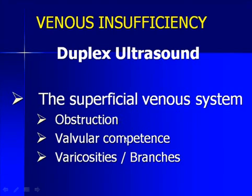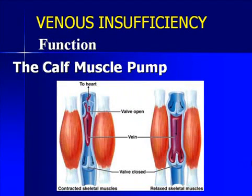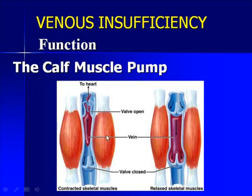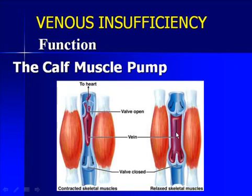We are interested in not only obstruction and valvular competence or incompetence, but the presence of varicosities and associated branches, as they can contribute to significant venous insufficiency. This brings up the importance of the calf muscle pump. When the calf muscles contract as we take a step, the muscles bulge and put extrinsic pressure on the venous system, causing emptying — essentially an inherent augmentation maneuver with increased flow back towards the heart. When the calf muscle relaxes, normally the valves prevent reflux flow, allowing refilling of the veins before the next contraction.